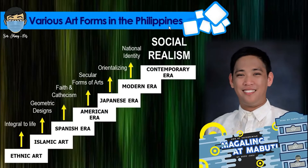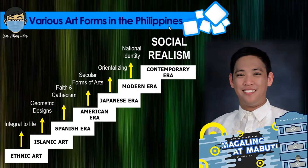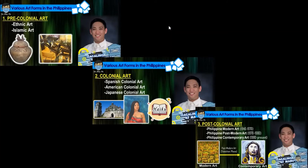Last week, I presented you this diagram showing how our country arrived at the contemporary art era. In other words, ethnic, Islamic, Spanish, American, Japanese, and modern Philippine arts are the significant phases that took place before we finally reached the contemporary Philippine art era. Allow me to divide them into three groups: number one, pre-colonial; second, colonial; and third, the post-colonial periods.